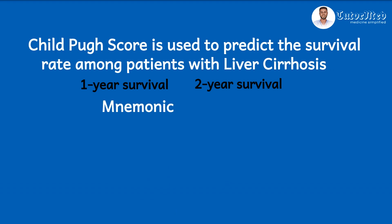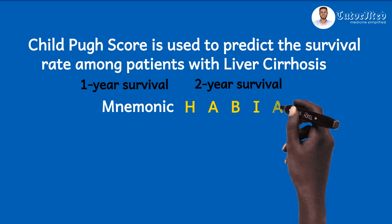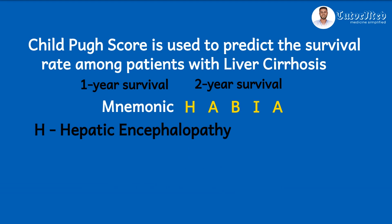The mnemonic is HABIA — H-A-B-I-A. There are five components of the Child-Pugh score system. H stands for Hepatic Encephalopathy: is there hepatic encephalopathy or not? If there is, what grade is it? It has a score assigned to it.